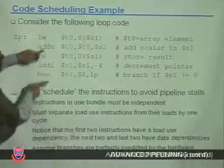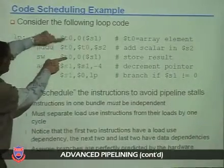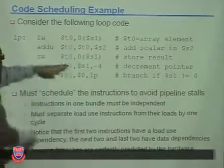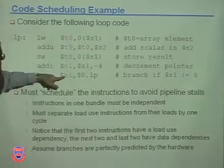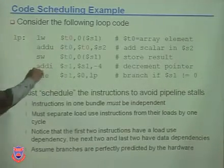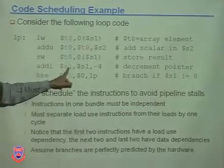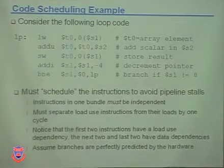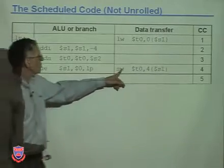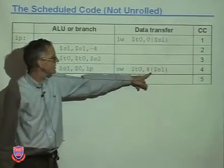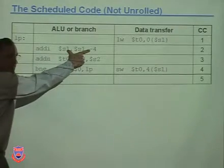The problem was that this store and this add need more distance. So what we did was we scheduled something in between - we moved the store down. But if you move the store below this one, you've changed the value of S1 before you use it. Nobody objected, but there should have been an objection. Here we're storing back to a different address, because we've already changed the address.